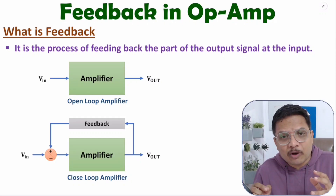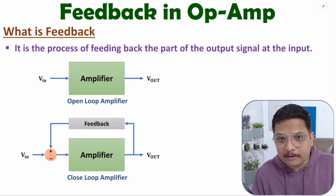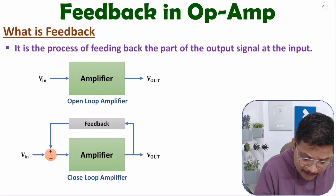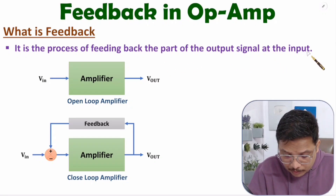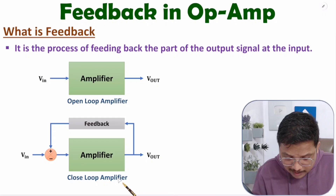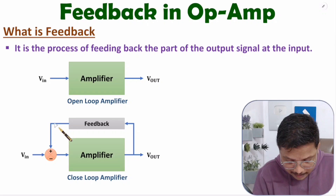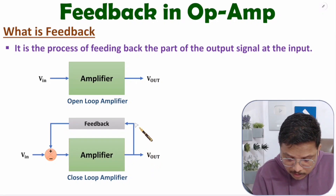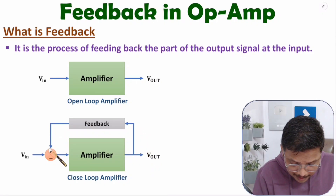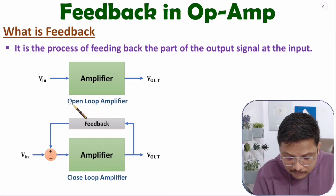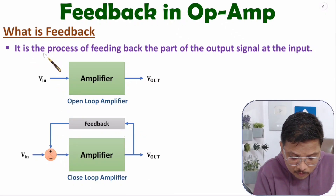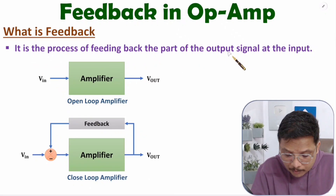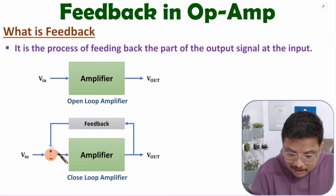Here I'll explain feedback with operational amplifiers. First of all, you need to understand what feedback is. Feedback is the process of feeding back part of the output signal to the input. You see here we have a closed loop amplifier and here we have an open loop amplifier. In a closed loop amplifier, we provide feedback — part of the output is fed back at the input side. In an open loop amplifier, we don't provide feedback.